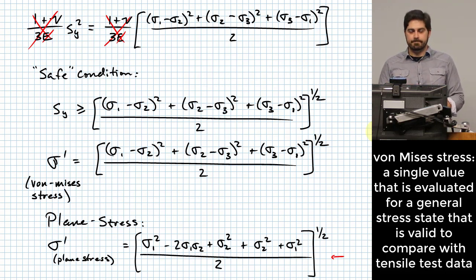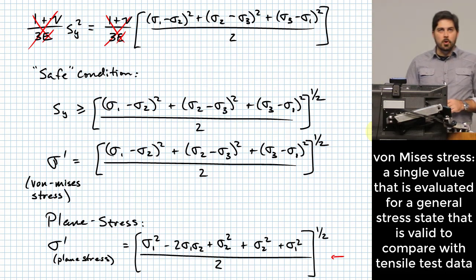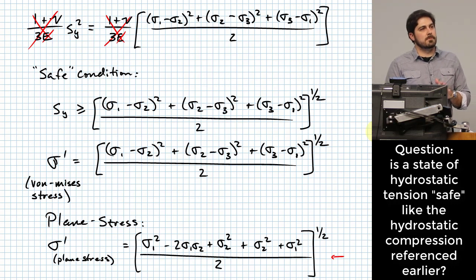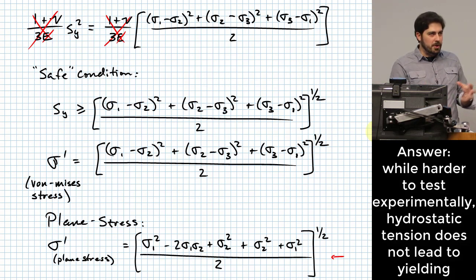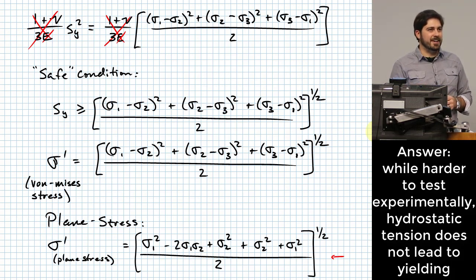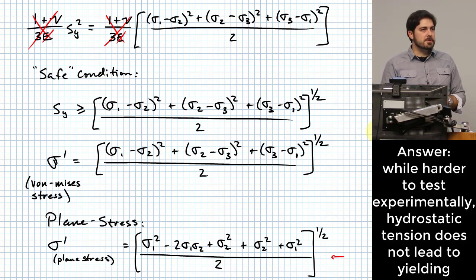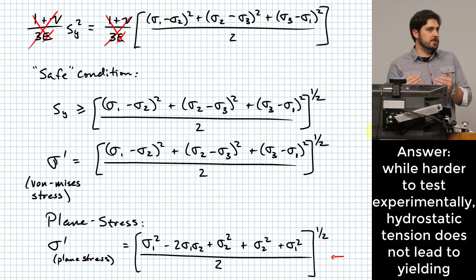The easiest case to evaluate mentally is the hydrostatic one — throwing something in a pressurized bath of liquid. That's a fairly easy experiment: the material doesn't tend to fail. A tensile stress applied in all directions simultaneously is harder to realize experimentally, but the theory says that situation also doesn't create the type of stress state that tends to fail the material.